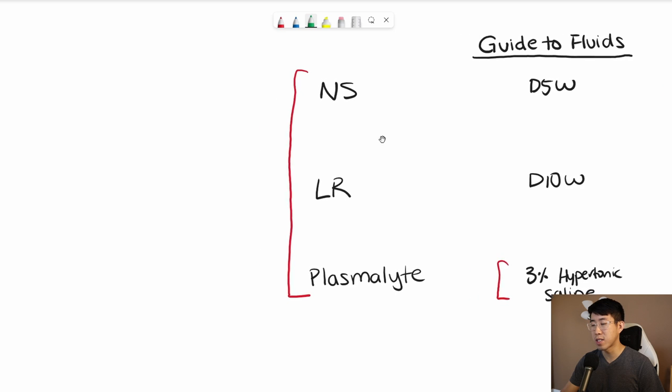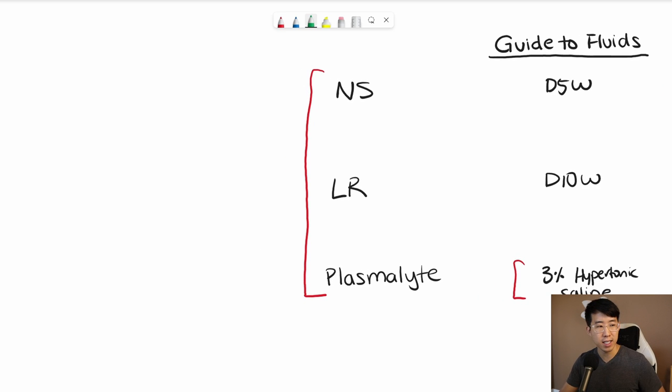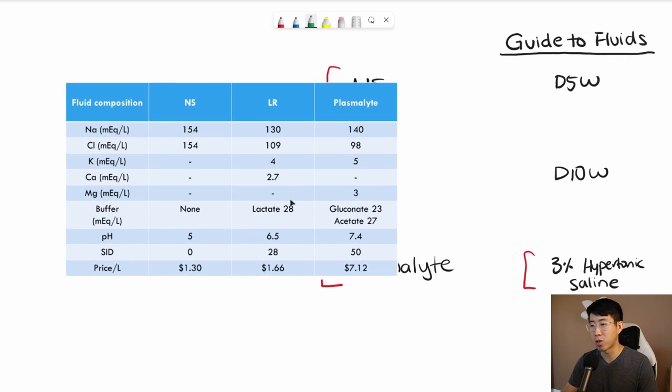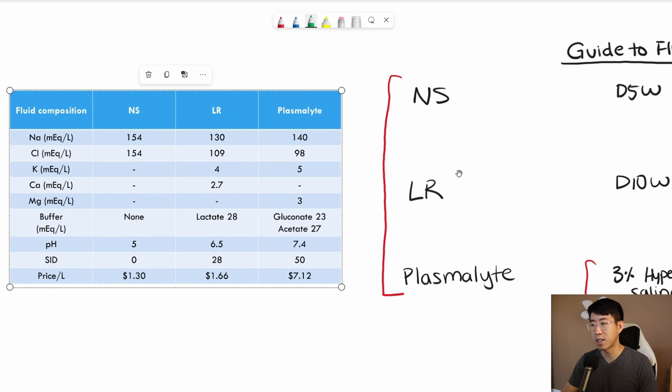Starting with the normal saline, lactated ringers, and plasmalite, there's one really good table that I like to just Google every time and just post for them when we're going over these fluids. And that's going to be this table right here. And it can really tell you some of the differences between these different fluids.